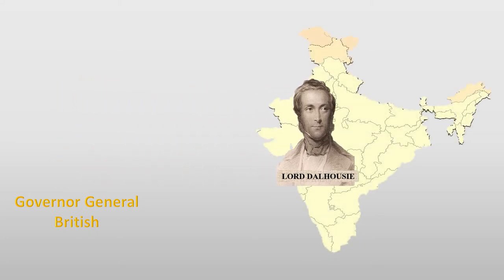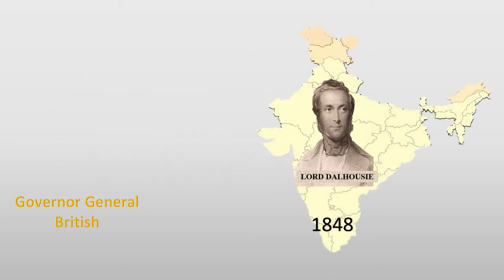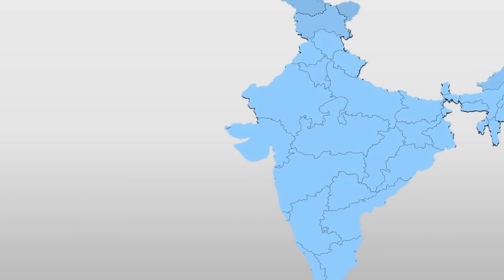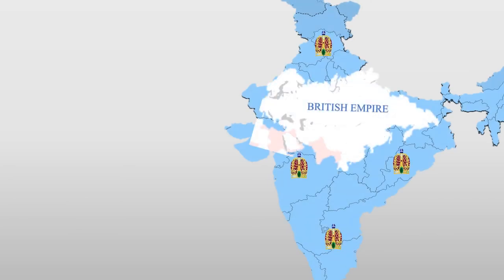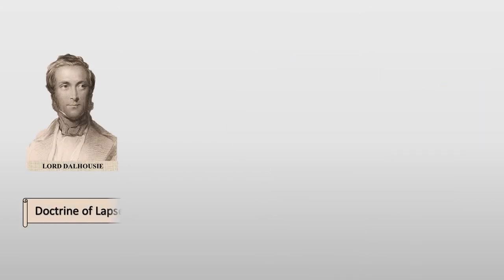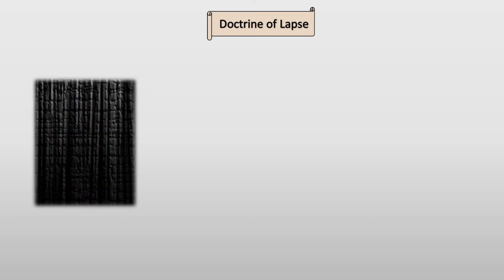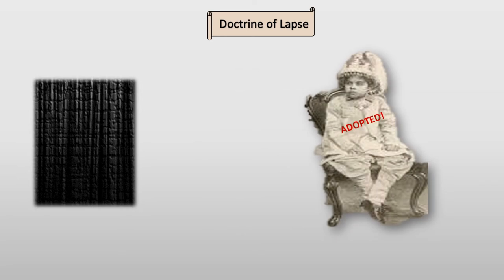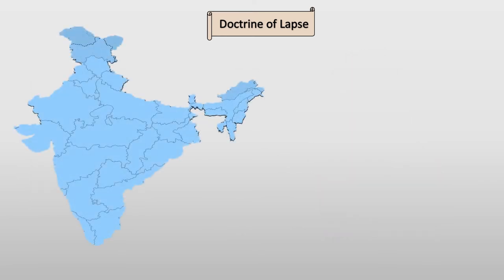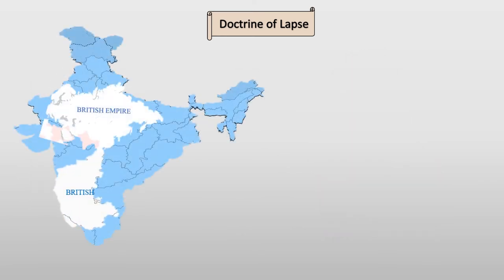Dalhousie, the Governor-General of British India, arrived in India in 1848. He tried to join Indian states ruled by Indian kings with the British Empire. He followed the Doctrine of Lapse policy. According to this policy, if a king died without having any son, or had only an adopted son, then that state was added to the British territories.